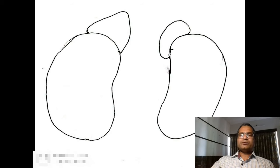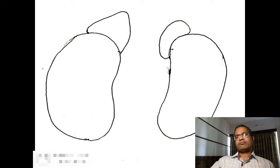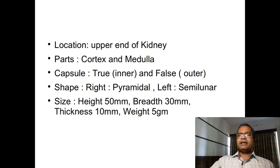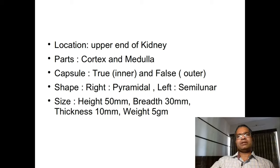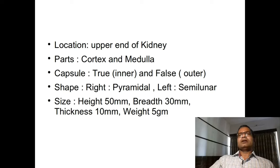The right and left suprarenal glands differ in size and shape. The right suprarenal gland is pyramidal in shape, while the left suprarenal gland is semi-lunar in shape. The height of these glands is approximately 15 mm, breadth is 30 mm, and thickness is about 10 mm. Each gland weighs approximately 5 grams.